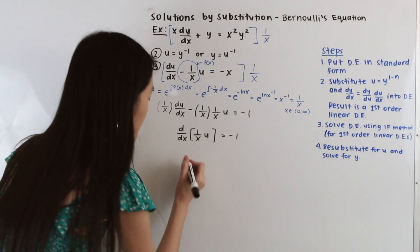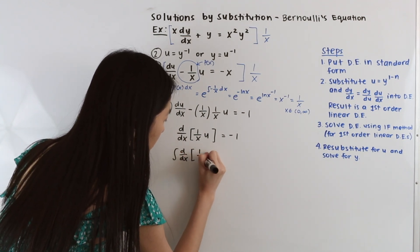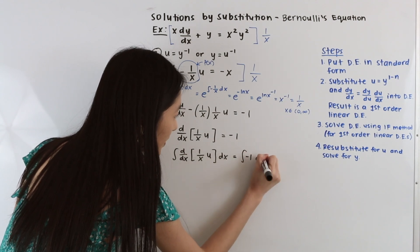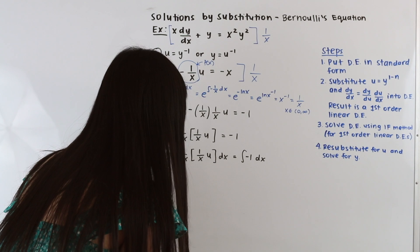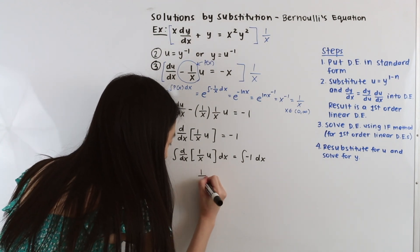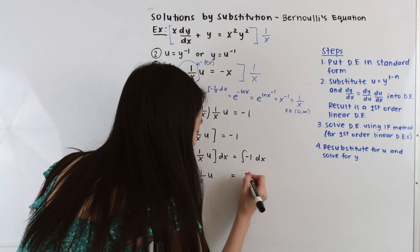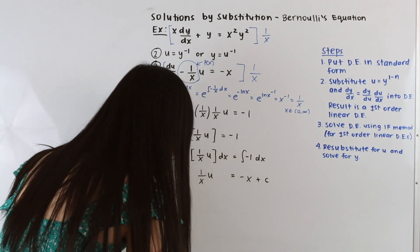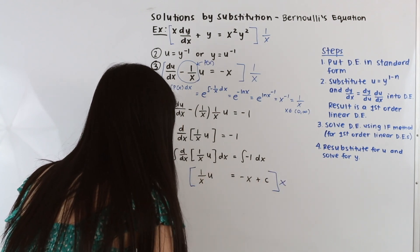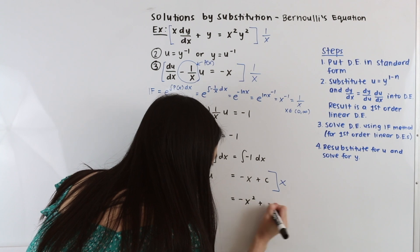Now we take the integral of both sides. On the left hand side, the integral of the derivative of (1/x)·u gives us (1/x)·u. On the right hand side, the integral of −1 dx is −x + C. Multiplying both sides by x, we get u = −x² + Cx.